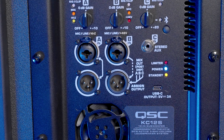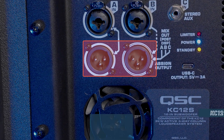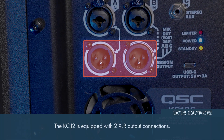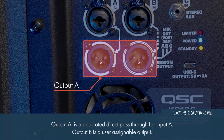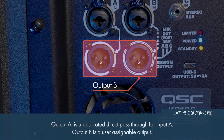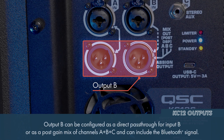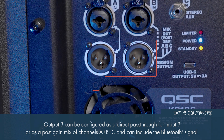The KC-12 also features two XLR output connections. Output A is a direct pass-through for input A. Output B is an assignable output that can be set up as a pass-through for channels A, B, or C, or a combined mix output of all three input channels, which can even include the Bluetooth signal.